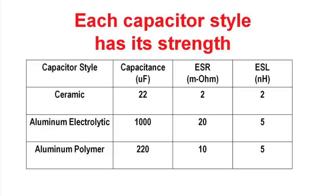In this chart, I've shown three different styles of capacitors and some of the parasitic components that go into the capacitor. Each particular capacitor style has its strength. For instance, the ceramic is a very small capacitor. It has low ESR and low ESL.